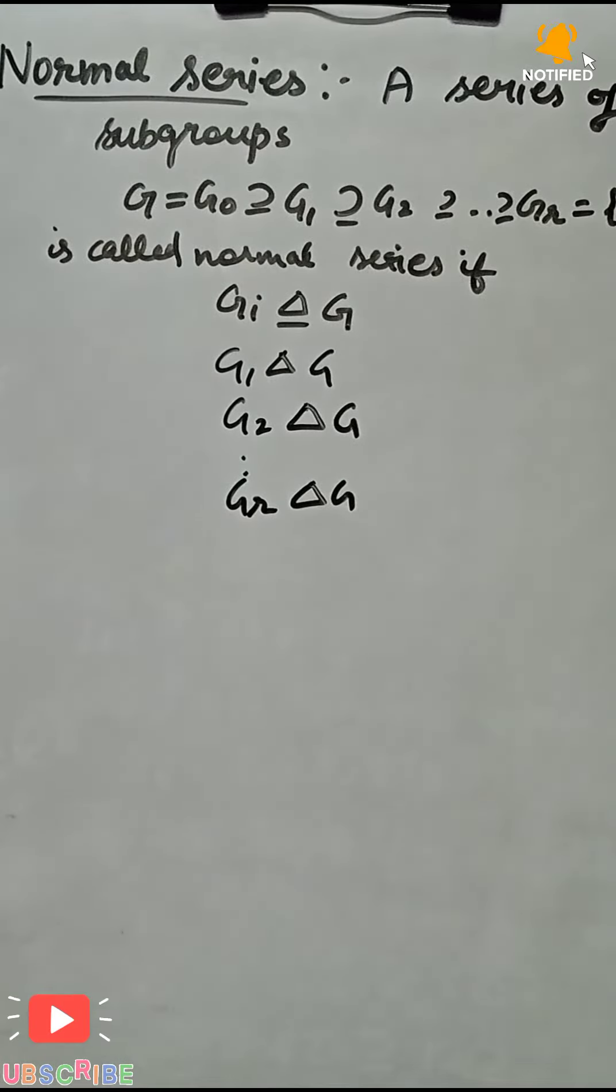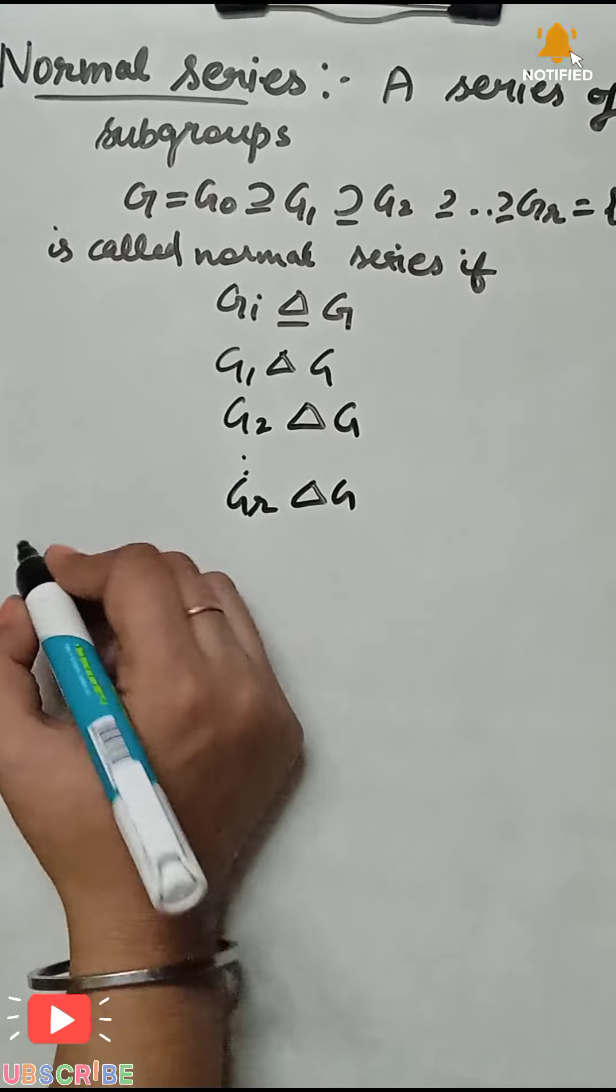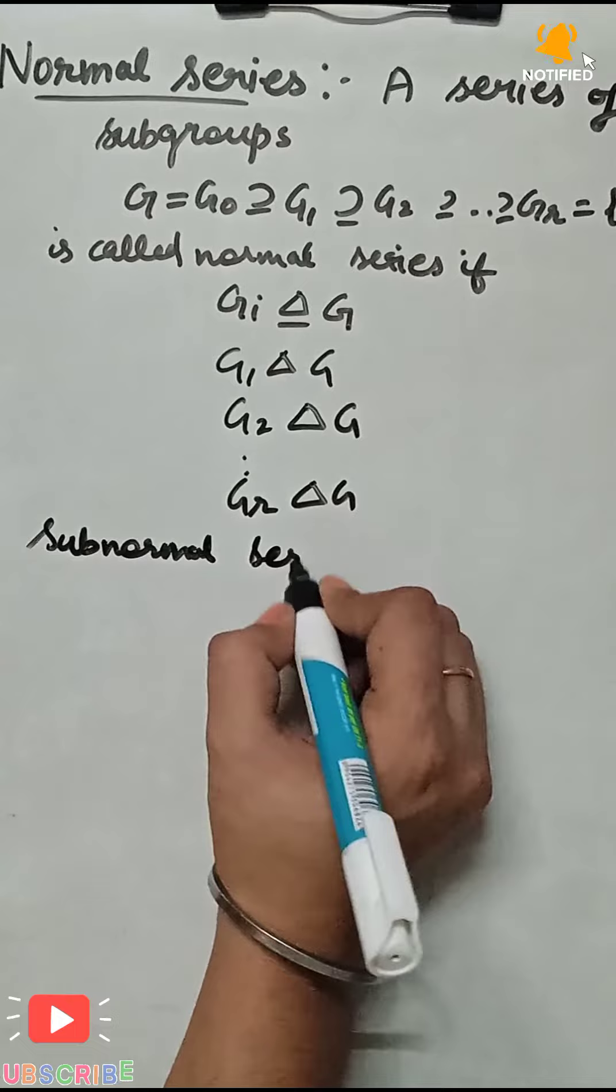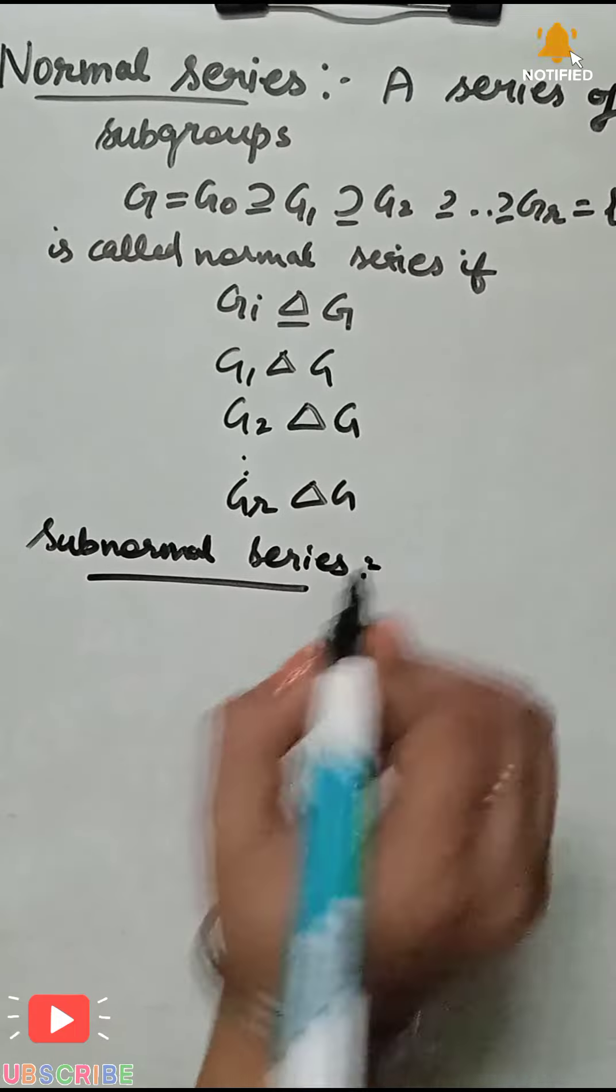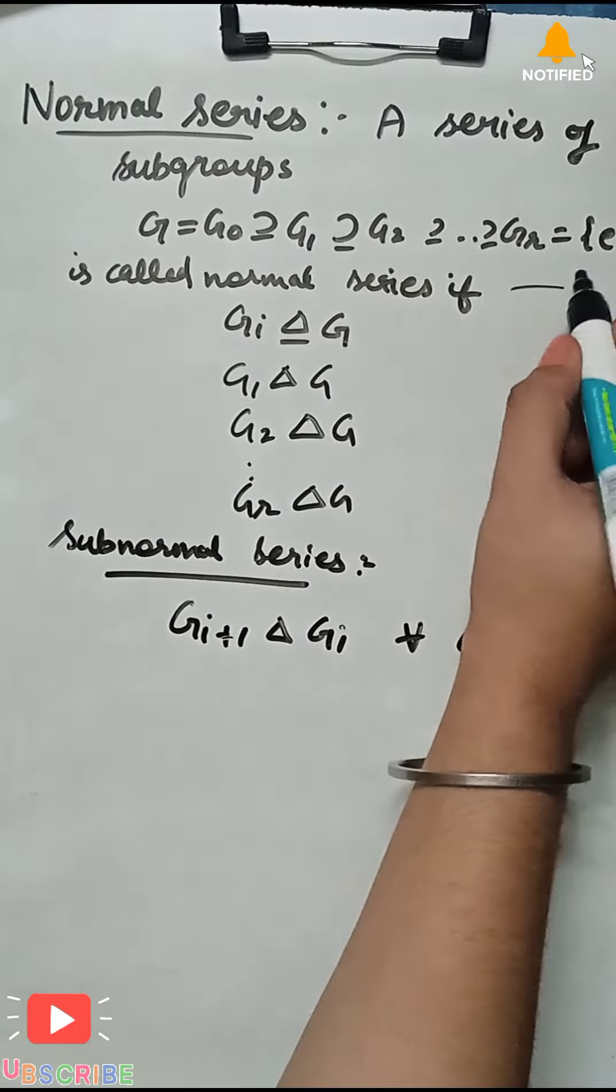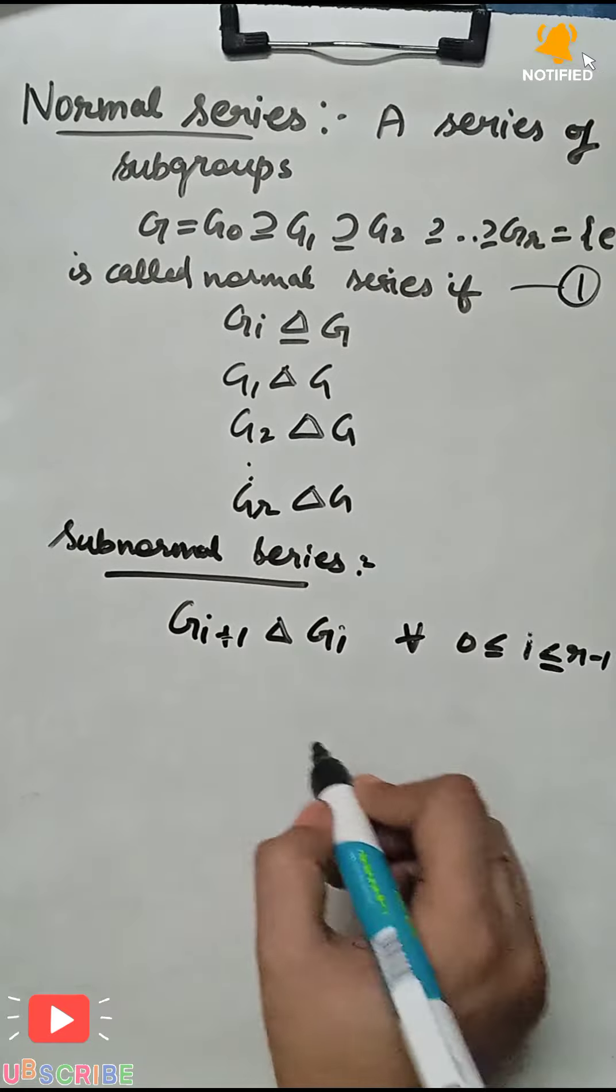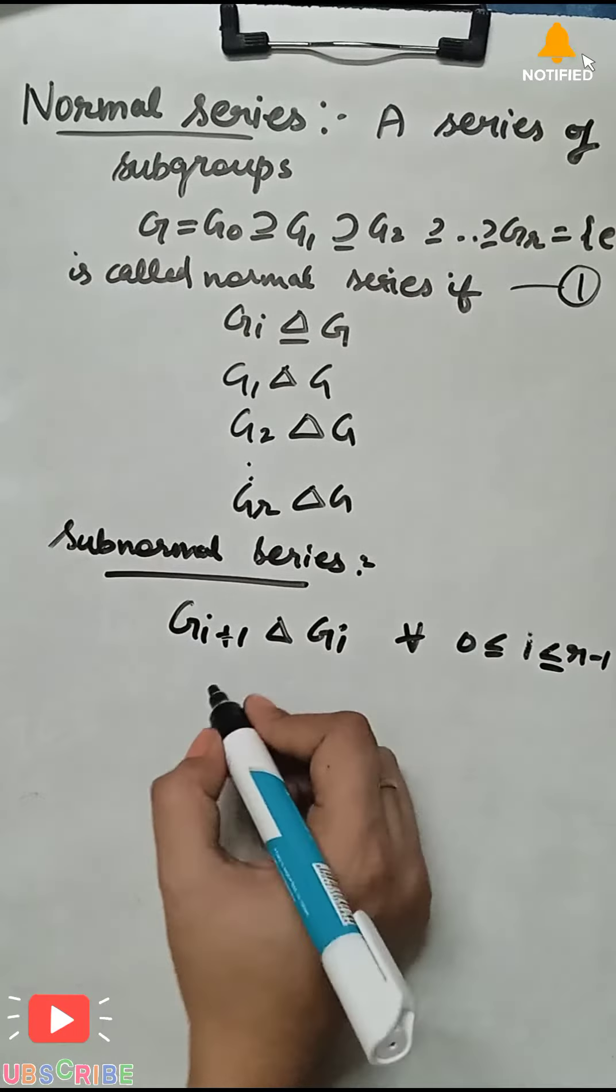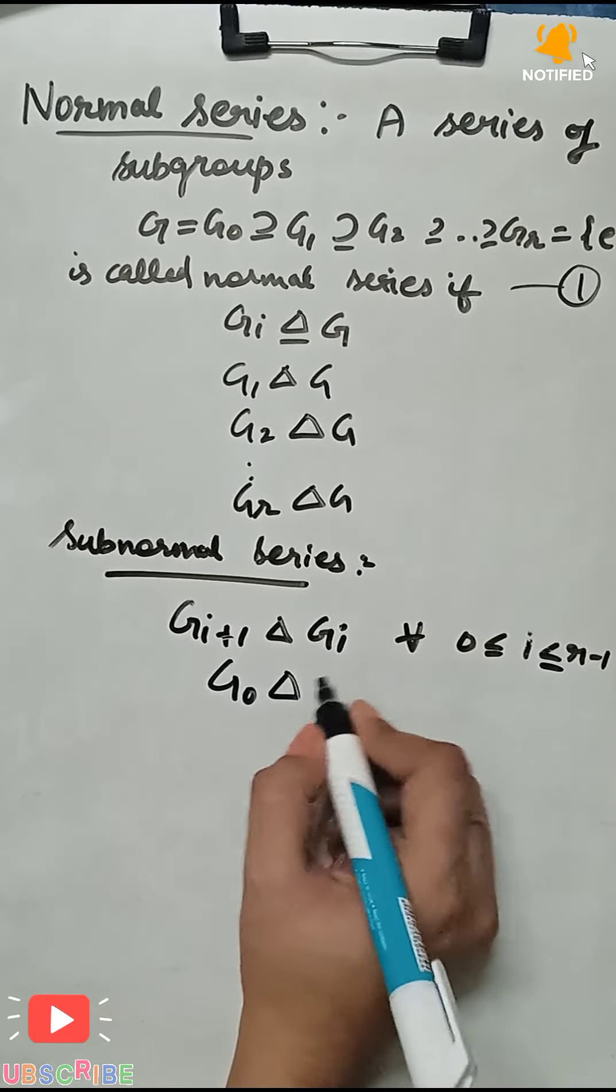Next definition: subnormal series. Friends, this series we will call a subnormal series, which means G0 will be normal in G1.